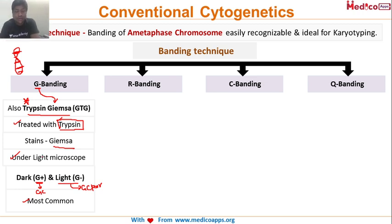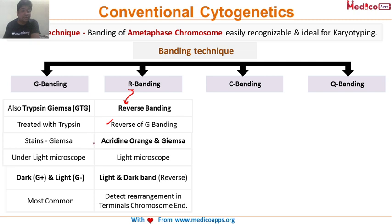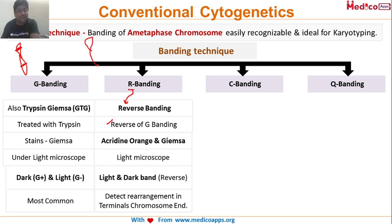Dark areas in G banding correspond to GC-rich segments — wherever guanine and cytosine are rich, those areas appear dark. Light bands correspond to GC-poor segments. This is the most common banding technique. R banding is basically the reverse of G banding — that's what the R stands for: reverse.